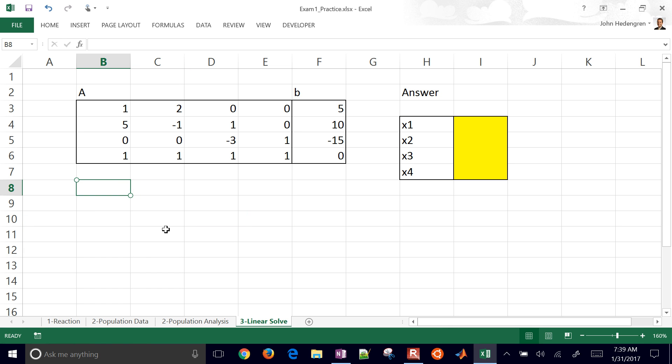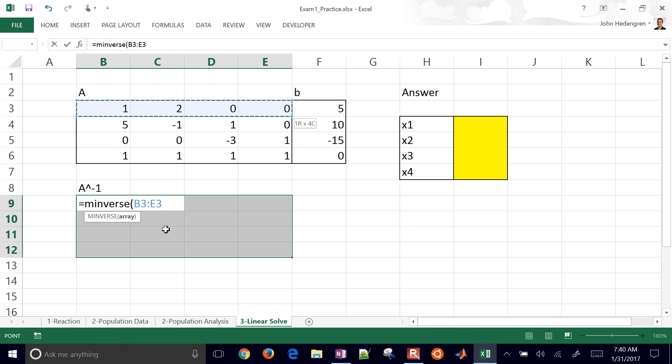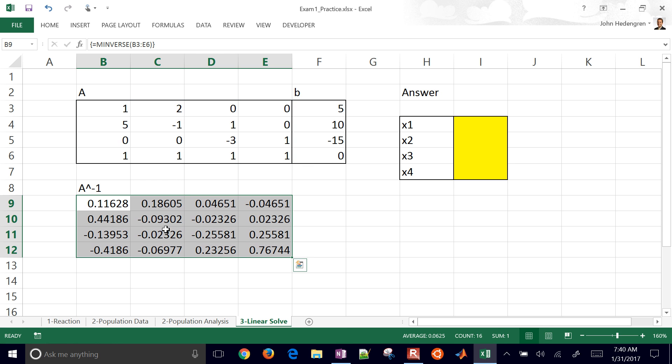Okay, so we're going to do the A inverse. First of all, we're going to select a region where it's going to go. So you've got to get a four by four region and do equals MINVERSE. And then we'll come up here, hit the shift key to select that region, or you can do it with the mouse, end parentheses, and then do control, shift, enter. And that's going to give you your matrix inverse.